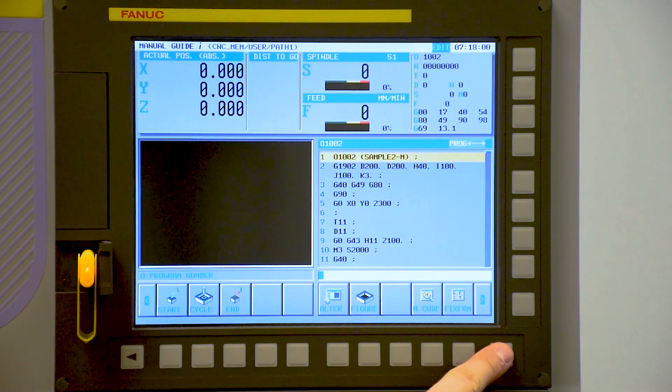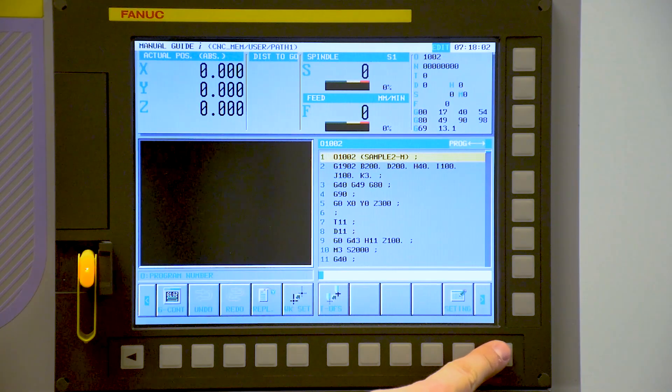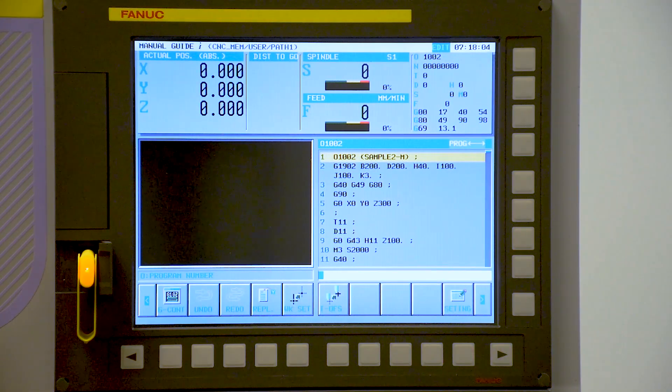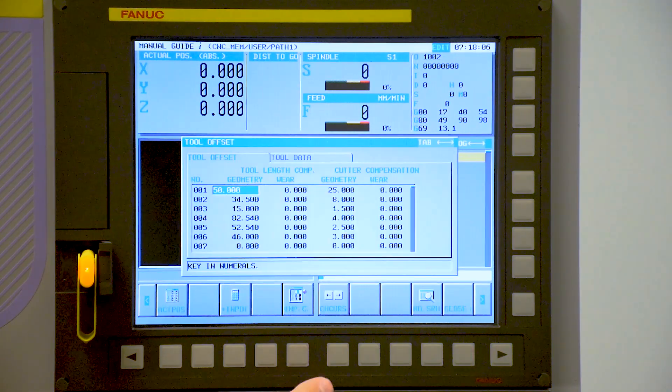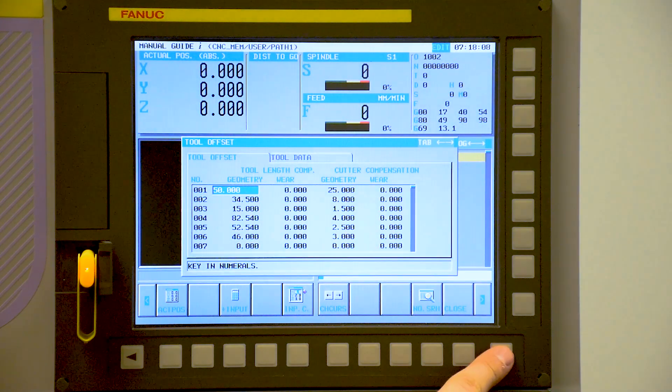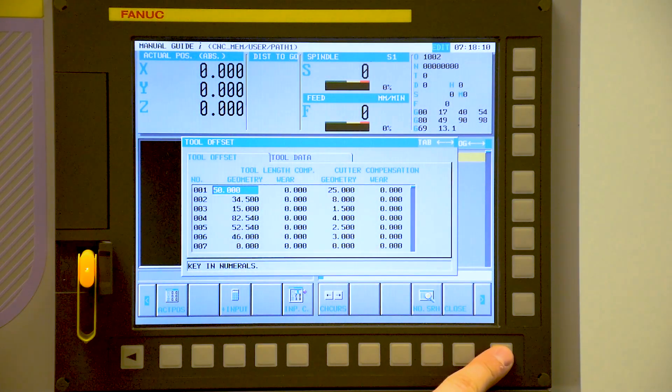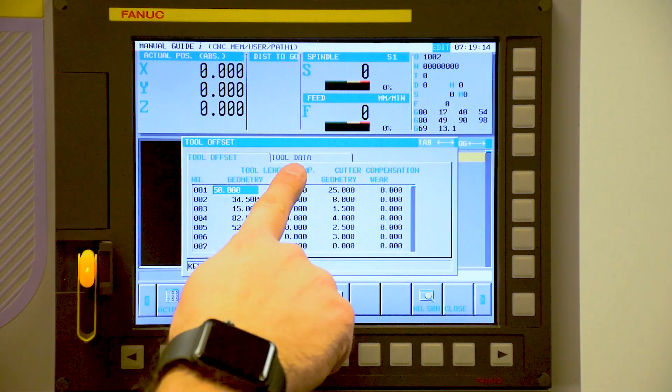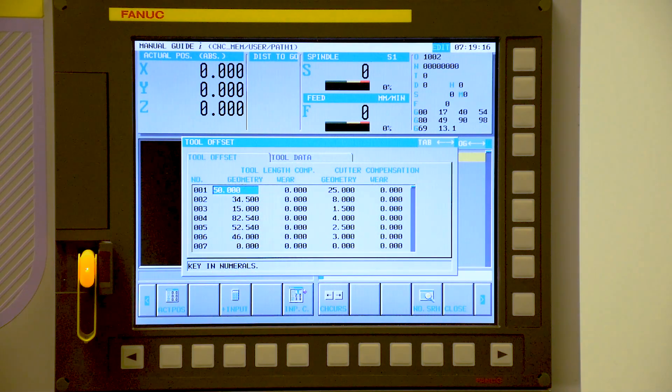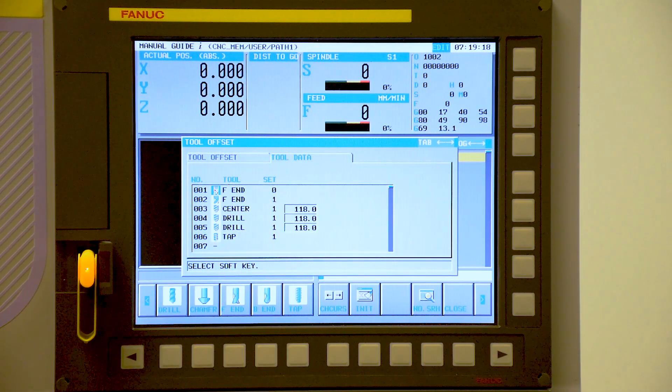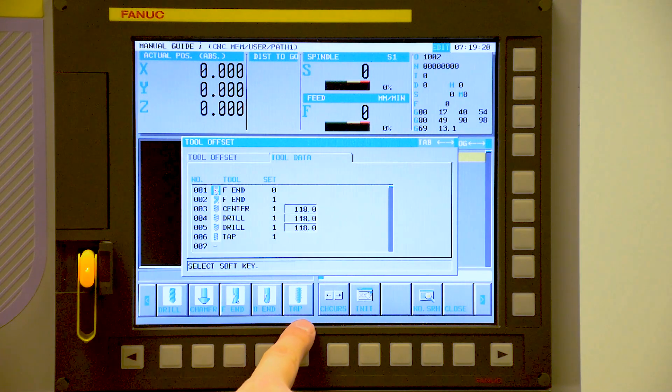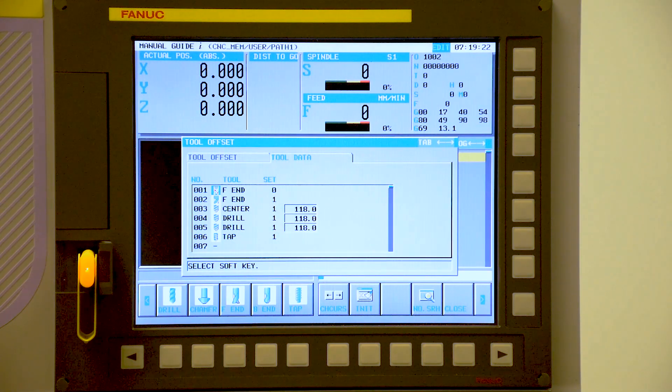This can be done by actually programming the control, or we can go to the tool offset by pressing the right hand soft key a few times. We get to the tool offset, so we have tool offset and tool data. Tool data is essentially drills, chamfer drills, end mills, bullnose mills, taps and a whole host of other tools that we can use.